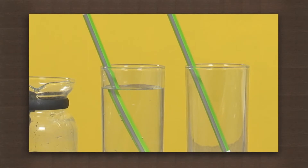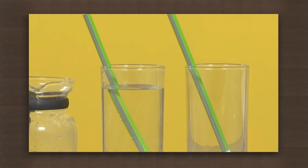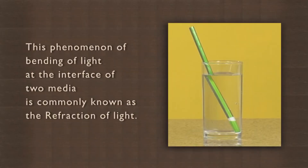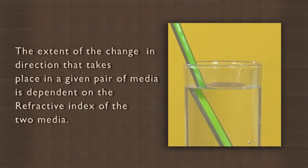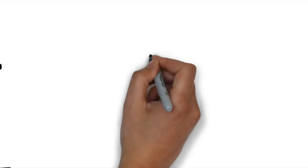This apparent bending of the pencil is because the speed of light is different in water and air. The light coming from the part of the pencil lying below the water changes its direction on coming out into the air. This phenomenon of bending of light at the interface of two media is commonly known as refraction of light. The extent of the change in direction depends on the refractive index of the two media.